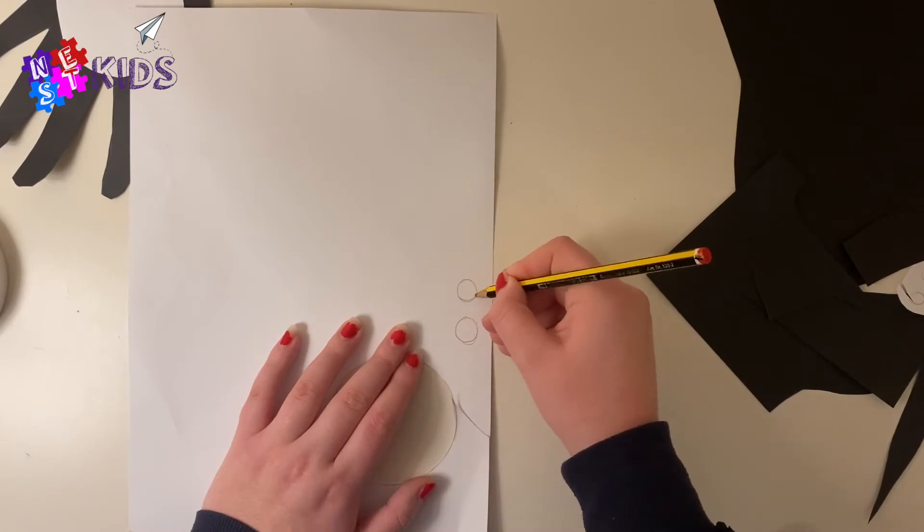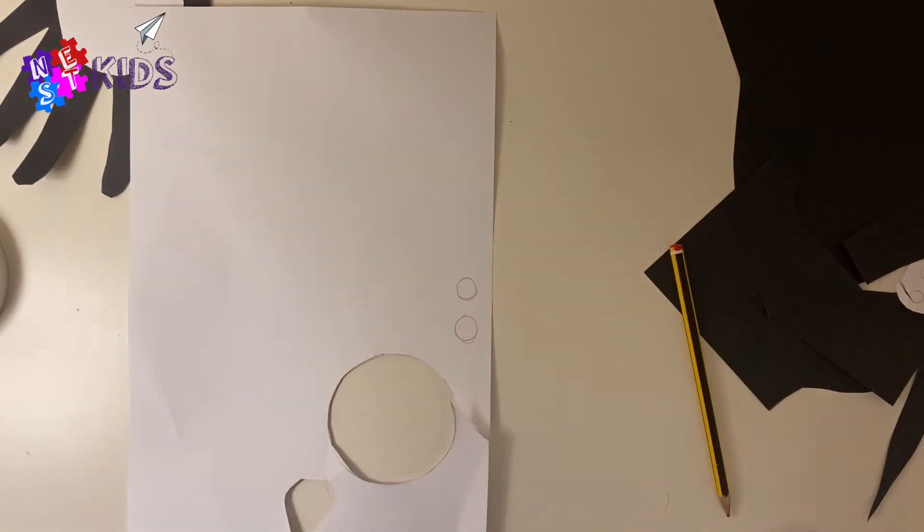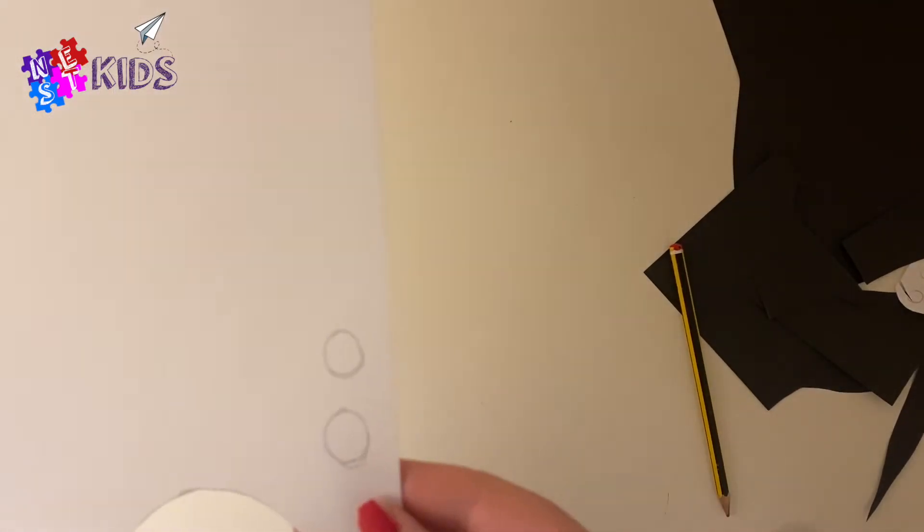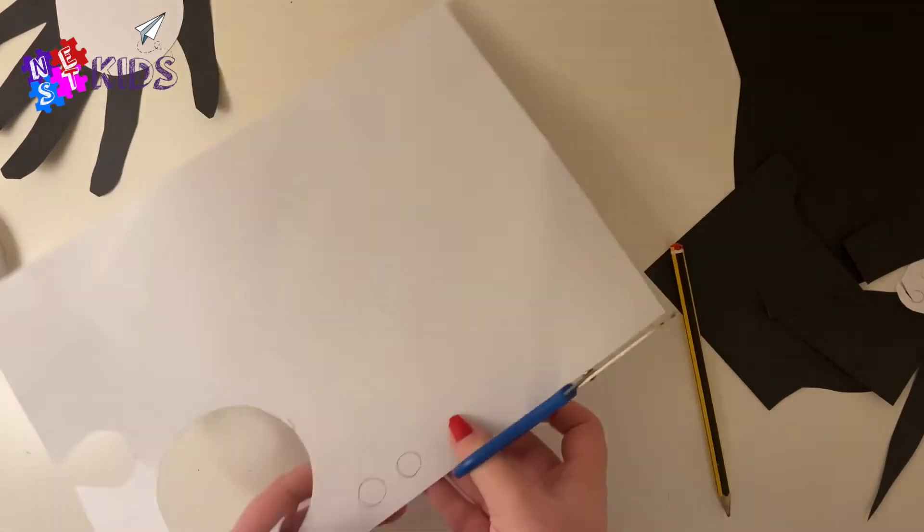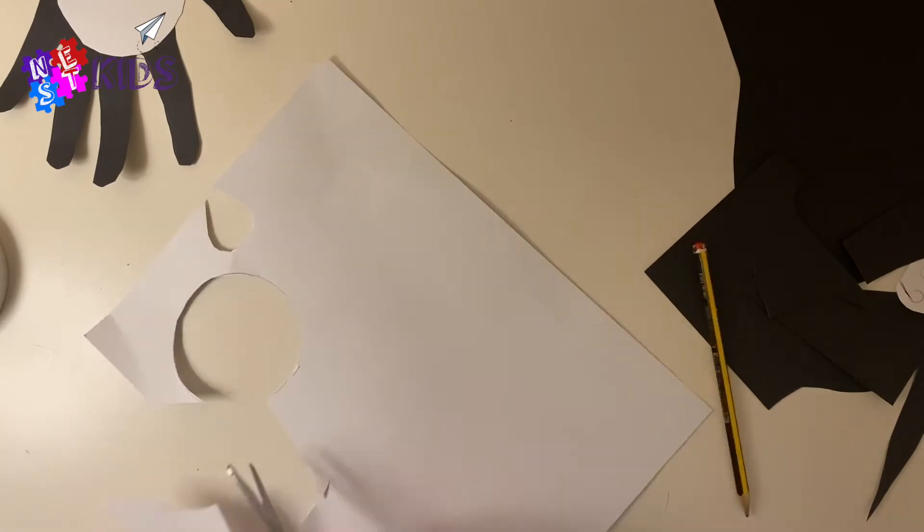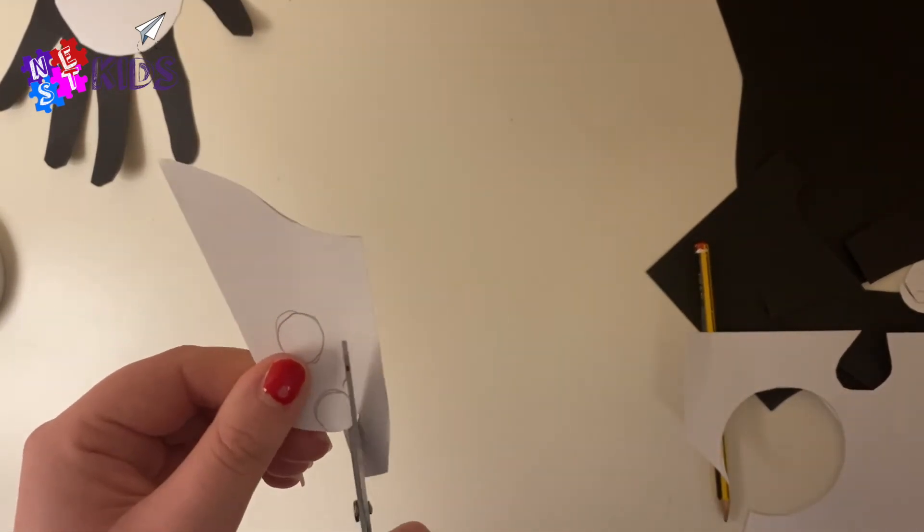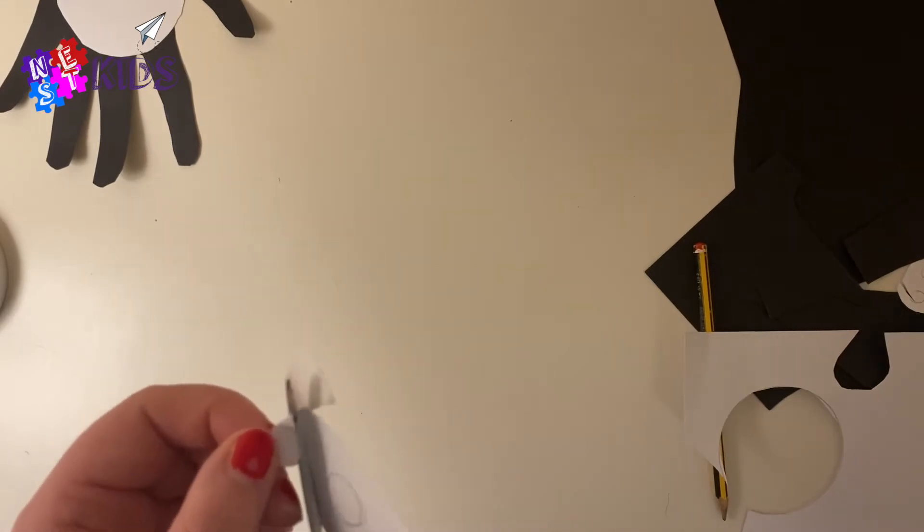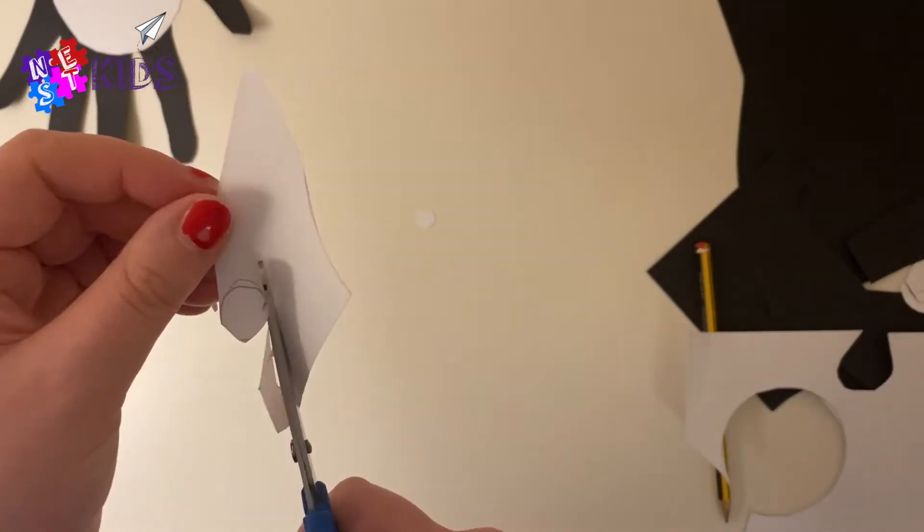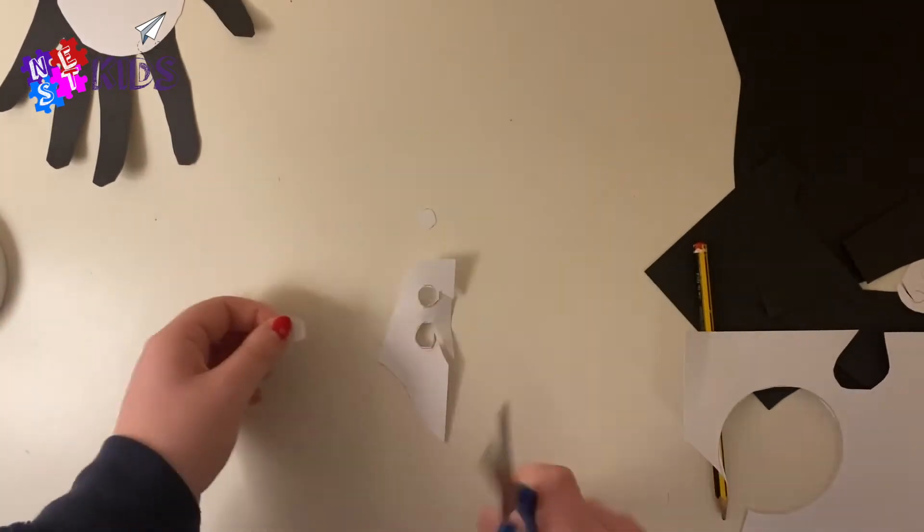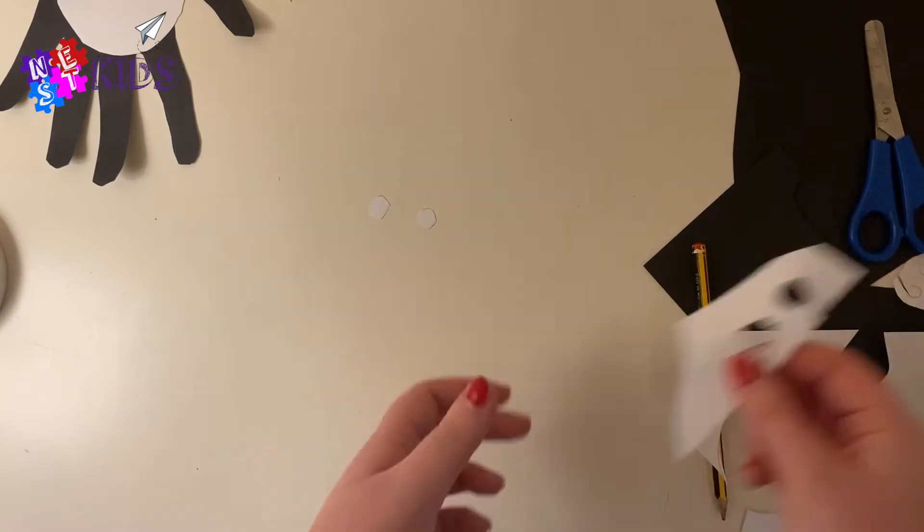Now draw two more circles but a bit smaller. These are going to be our eyes. Cut these eyes out, again be careful with the scissors. They don't have to be perfect circles, they just have to be good enough so we can use them on our penguin.